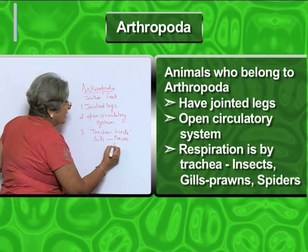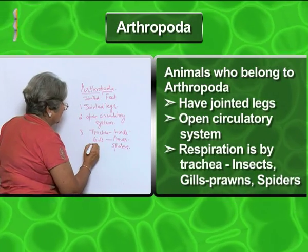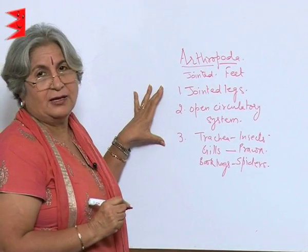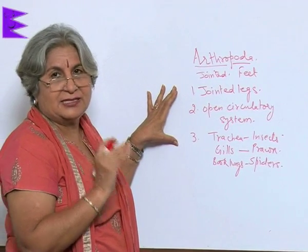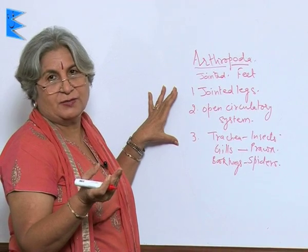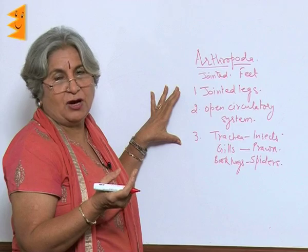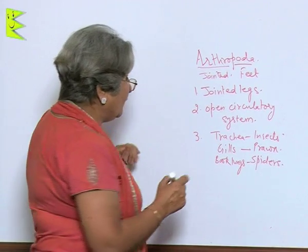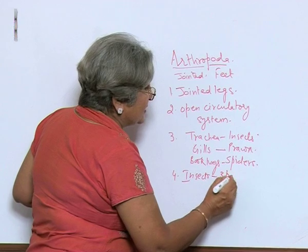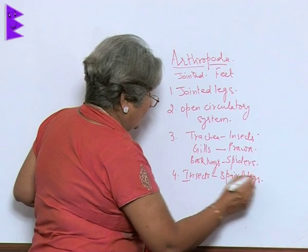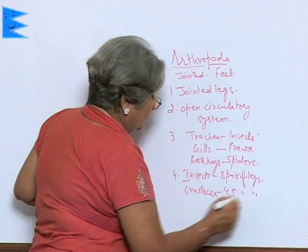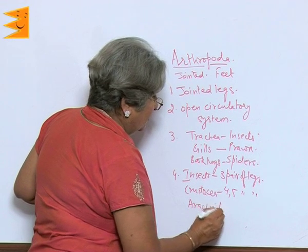There are spiders also. In Arthropoda there are three further subdivisions: Insecta, Crustacea, and Arachnida. The examples of Insecta are cockroach, mosquito, etc. The example of Crustacea is prawn, and Arachnida is spider. The number of legs varies — insects have three pairs of legs, Crustacea four or five, and Arachnida four.